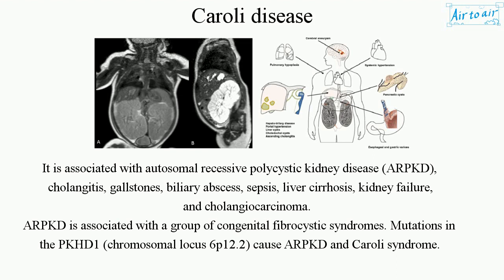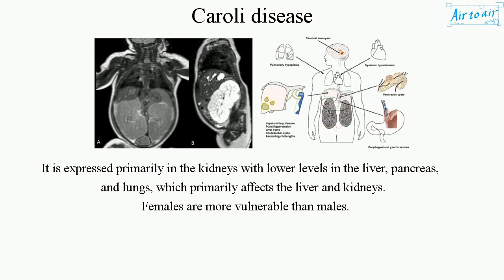ARPKD is associated with a group of congenital fibrocystic syndromes. Mutations in the PKHD1 chromosomal locus 6p12.2 cause ARPKD and Caroli syndrome. It is expressed primarily in the kidneys with lower levels in the liver, pancreas, and lungs, which primarily affects the liver and kidneys.